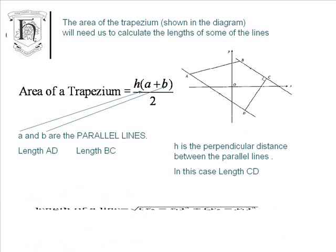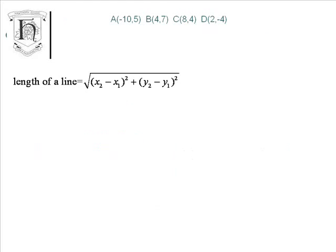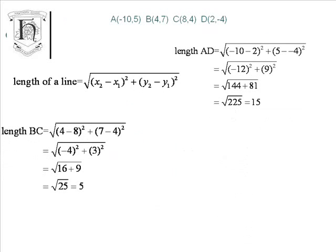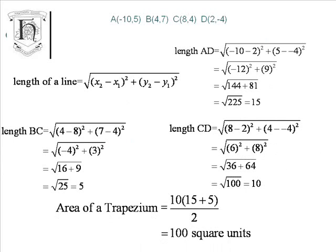So we're going to need to know our length of a line formula, which is by Pythagoras' theorem, the square root, the difference in the X squared plus the difference in the Y squared. So three lengths to calculate: length AD, length BC and length CD. Applying the length of the line formula in each of the cases, length AD turns out to be 15, length BC turns out to be 5, and length CD turns out to be 10. Substituting these three numbers into the area of the trapezium formula gives us a total answer of 100 square units.